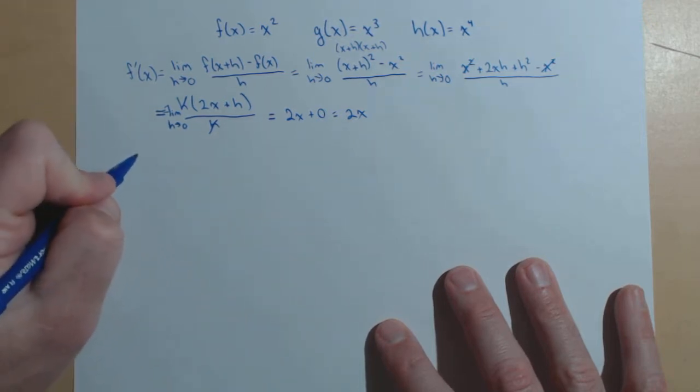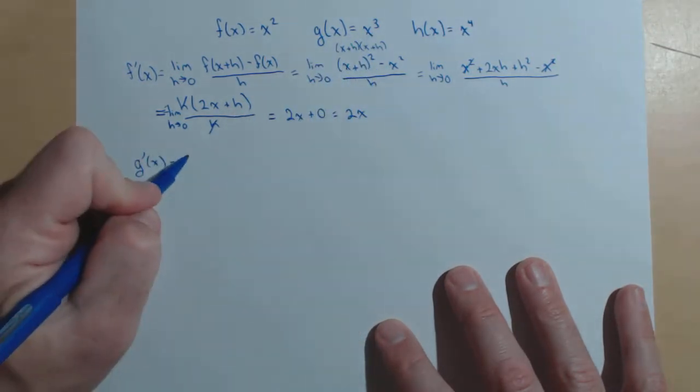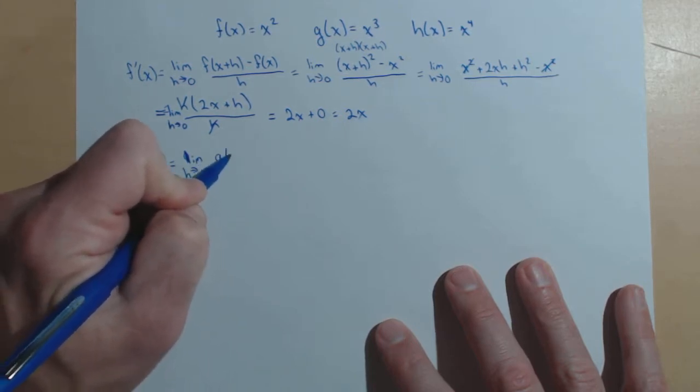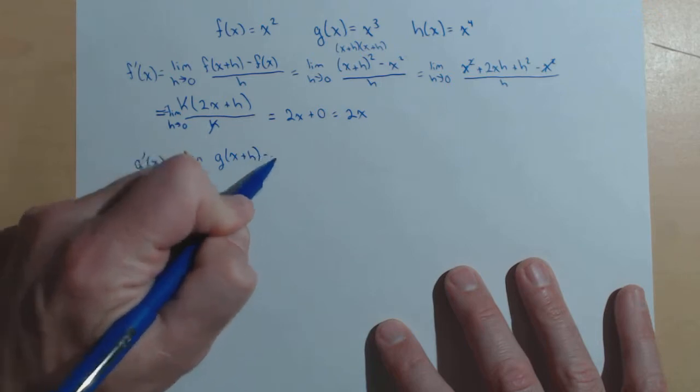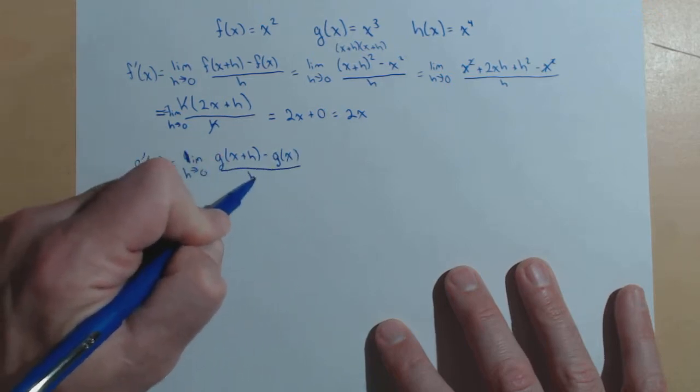All right, not too bad. Let's go on to the next one, g prime of x, which is using x cubed. So, we're going to have the limit as h goes to zero of g of x plus h minus g of x all over h.